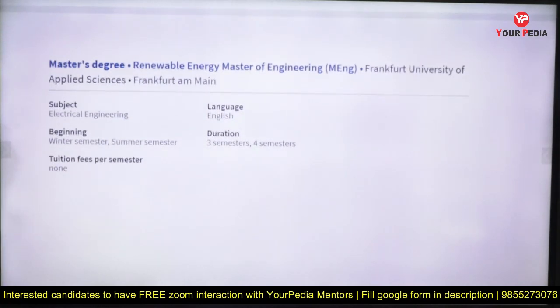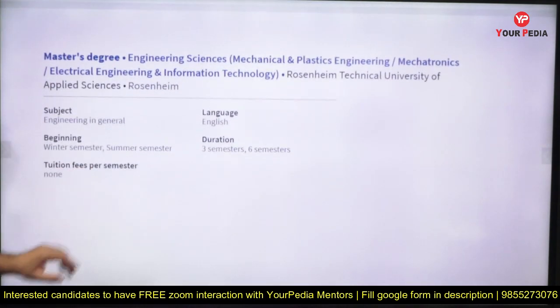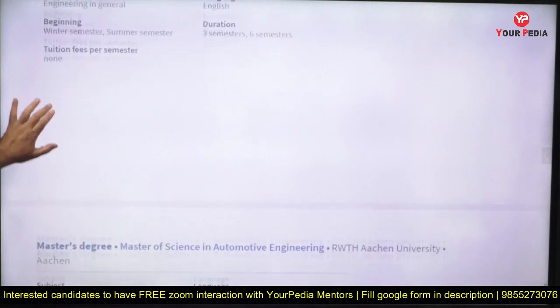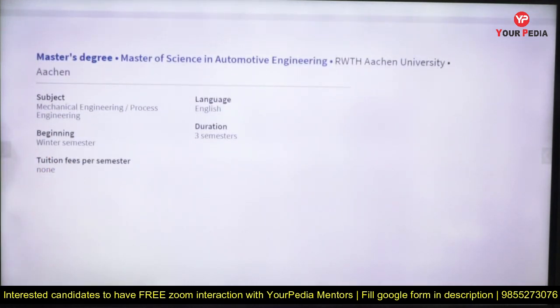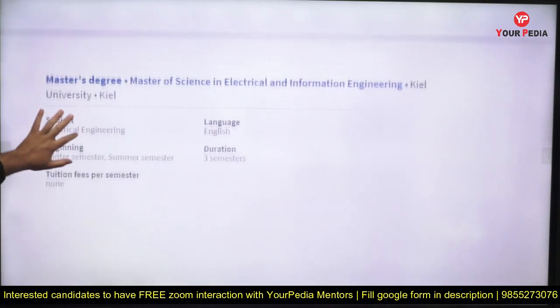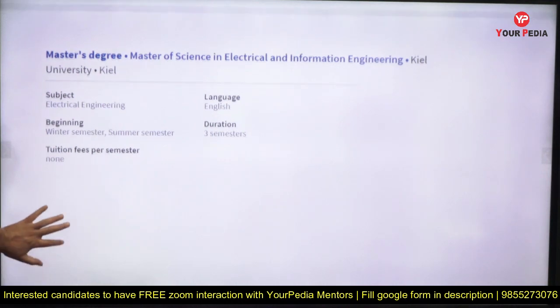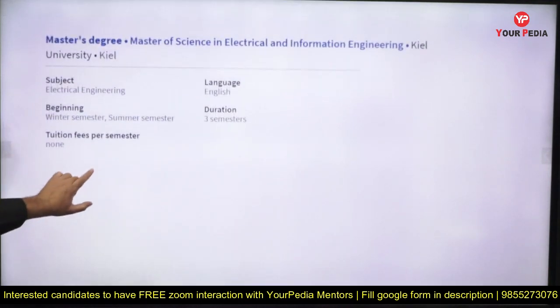Renewable Energy — Master of Engineering at Frankfurt University. Mechatronics at RWTH Aachen — a very prestigious course with two options: three semesters or six semesters. RWTH accepts GRE or GATE scores. Electrical and Information Engineering is also available. These were some of the top options in German universities that you can explore and apply to.